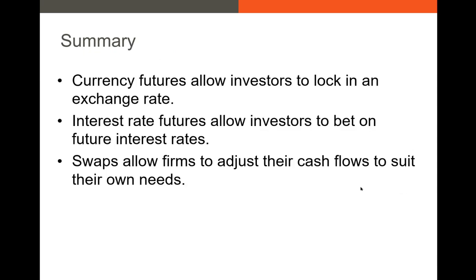Let's summarize. We talked about currency futures and how to calculate the forward currency exchange rate — currency futures allow investors to lock in an exchange rate close to the forward rate. Interest rate futures allow investors to bet on future interest rates, usually on very liquid bonds like T-bills, T-notes, and T-bonds. And we saw a detailed example of swaps — swaps allow firms to adjust their cash flows to suit their own needs, exchanging cash flows once they enter into the swap agreement. If you have any questions, please feel free to reach out. Thank you very much.